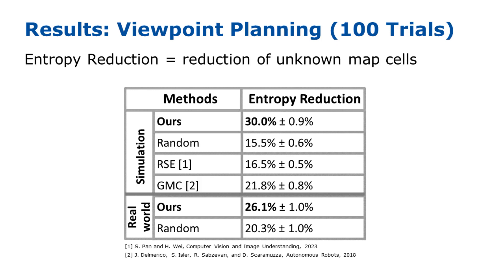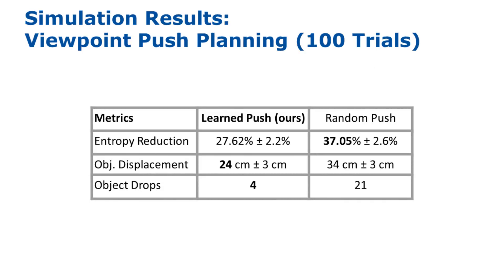The slightly diminished entropy reduction compared to simulation can be attributed to sensor noise in the real world. To evaluate the complete viewpoint push planner pipeline, we simulated the same scenarios and tested the additional entropy reduction after multiple pushes. We compared our trained push prediction network against a random push selection. Both methods achieved a high entropy reduction, with the random approach leading. However, this reduction comes at the cost of larger object displacements and falling objects. In contrast, our system notably minimized object displacement by 10 cm and reduced object drops from 21 to 4 in 100 trials.